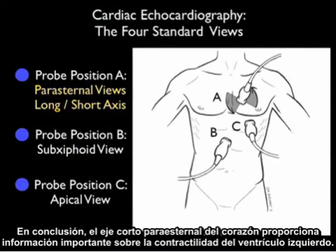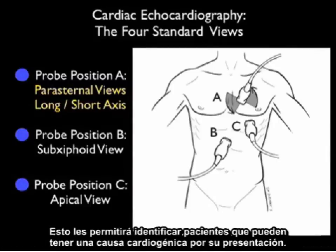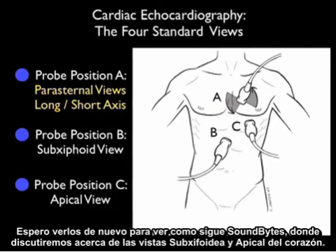In conclusion, the parasternal short axis view of the heart gives a great deal of information about the contractility of the left ventricle. This will allow you to identify patients who may have a cardiogenic cause for their presentation. I hope to see you back as SoundBytes continues and we move on to discuss the subxiphoid views and apical views of the heart.